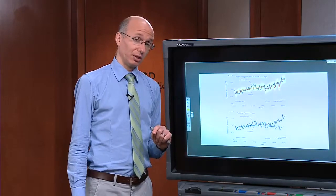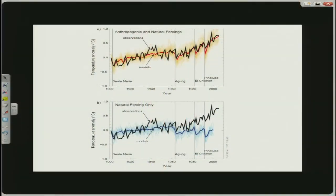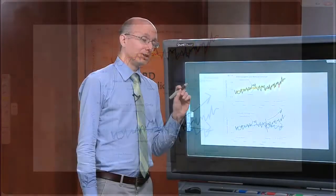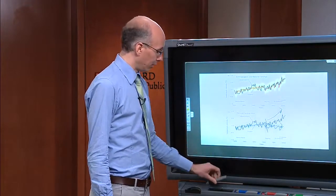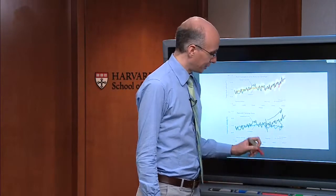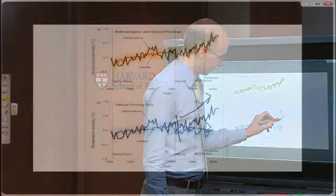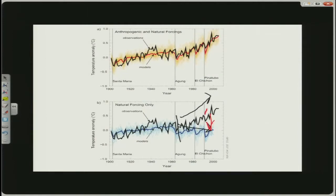But what happens when we repeat that experience and we take out the anthropogenic factors? We just do natural factors alone. Well, it turns out that around 1960 or so, the observed temperatures continue to go up, but the model outputs do not. Which is to say that the climate models don't predict the temperature on Earth very well if you don't include greenhouse gases. What's interesting is that there has never been a scientifically validated explanation for this difference between those graphs other than the addition of greenhouse gases to Earth's atmosphere.